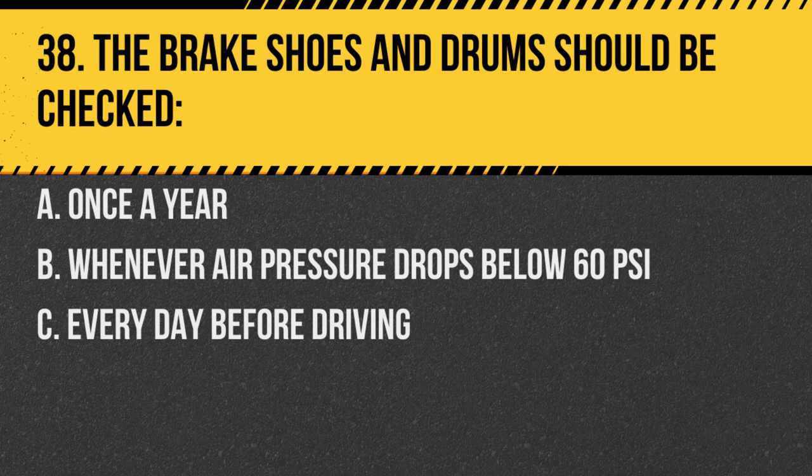Question 38. The brake shoes and drums should be checked: A. Once a year. B. Whenever air pressure drops below 60 psi. C. Every day before driving. Answer C. Every day before driving. Regular checks ensure safety.